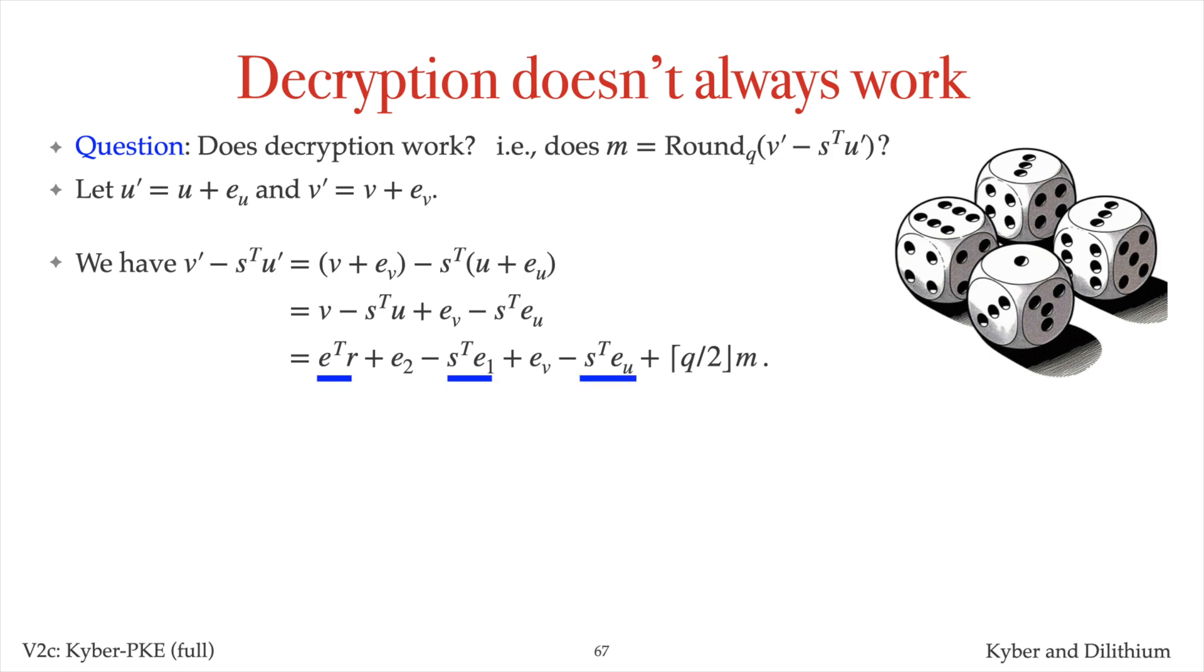Notice that the three inner products in the expression for the error polynomial are between vectors of small polynomials. Also, E2 and E_V are small polynomials. Thus, one can hope that the error polynomial in decryption is sufficiently small, and consequently, decryption produces the correct plaintext.